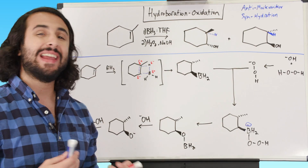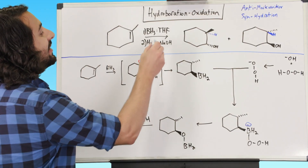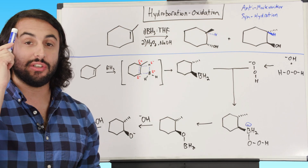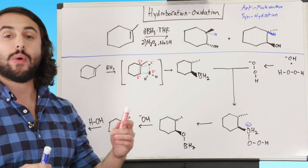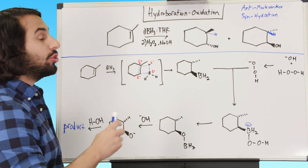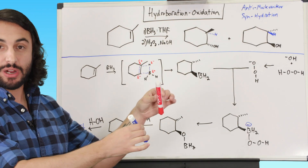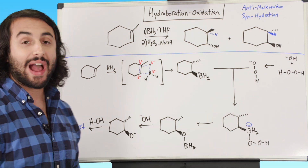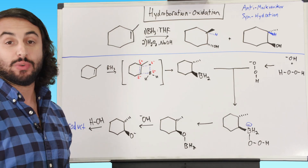That's the general overview of hydroboration oxidation. We're going to go over the mechanism now, but we may not necessarily need to know it. What we definitely need to be able to do is see these conditions, look at a substrate, and say: I know that those conditions are for anti-Markovnikov syn hydration — so I'm going to take H and OH, put them onto that molecule in anti-Markovnikov fashion, with OH to the less substituted carbon, and they go to the same side of the molecule.